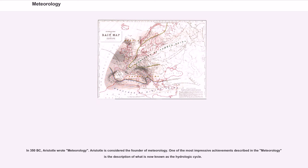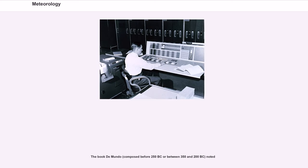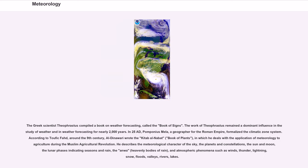In 350 BC, Aristotle wrote Meteorology. Aristotle is considered the founder of meteorology. One of the most impressive achievements described in the Meteorology is the description of what is now known as the hydrologic cycle. The book De Mundo noted that the Greek scientist Theophrastus compiled a book on weather forecasting, called the Book of Signs. The work of Theophrastus remained a dominant influence in the study of weather and in weather forecasting for nearly 2,000 years.